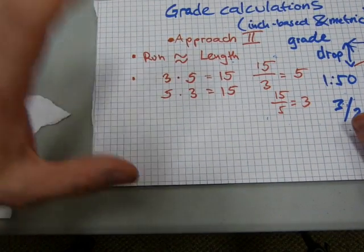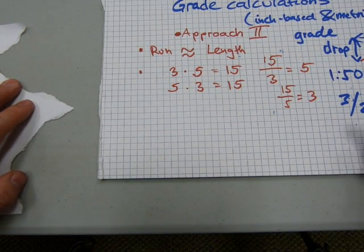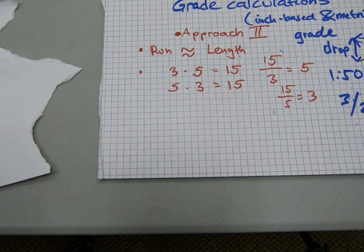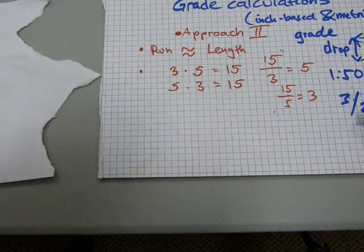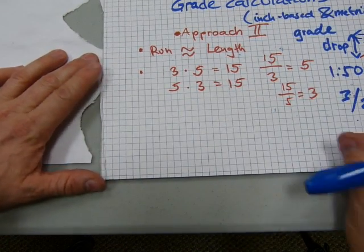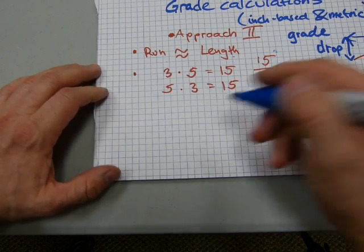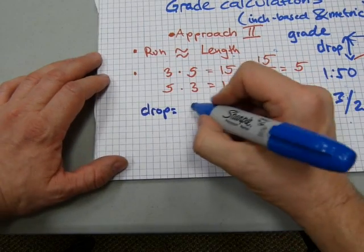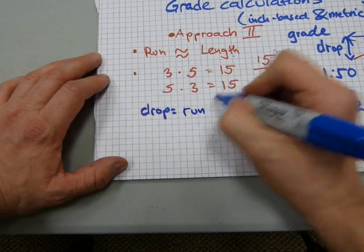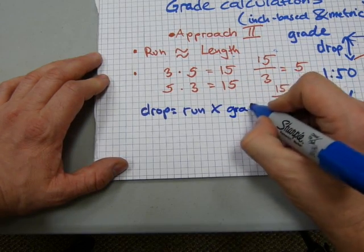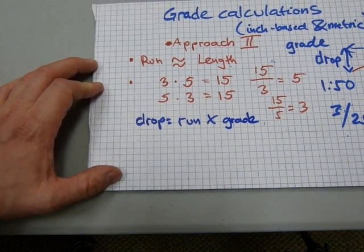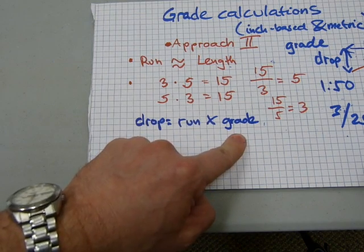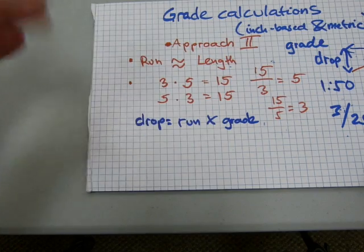Now, how it relates to pipe calculations is that you have a couple of formulas that work, given that the run is the same or close enough to the length. You can calculate the drop of a pipe by timesing run with grade. And, of course, run and grade. It doesn't matter which way you multiply. Grade can be here and run can be there. Just as 3 by 5 is the same as 5 by 3. Okay? So, these can trade places in the same thing.